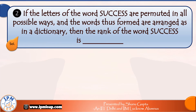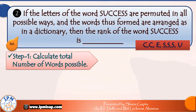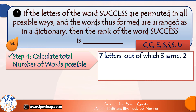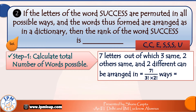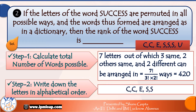The next example is based on the word success, which has repeating letters. If the letters of the word success are permuted in all possible ways and arranged as in a dictionary, then what is the rank of the word success? Looking closely at success: it has seven letters total — two C's, one E, three S's, and one U. They can be arranged in 7! / (3! × 2!) ways, which calculates to 420. The letters in alphabetical order are: C, C, E, S, S, S, U.